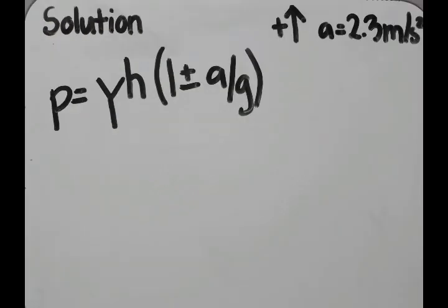Since the term used in the problem is 'being raised,' we would have a vertical motion. When the acceleration is 2.3 meters per second squared, it is positive since we are on the upward motion. Now we use the formula: p equals unit weight times the height multiplied by 1 plus the acceleration divided by gravity.